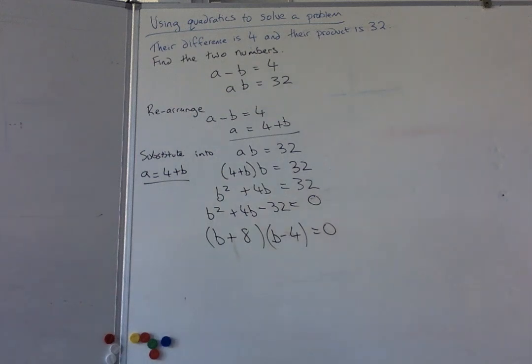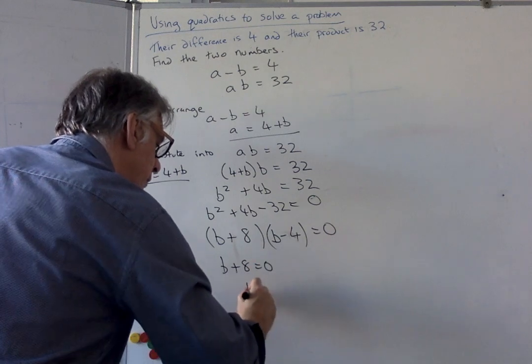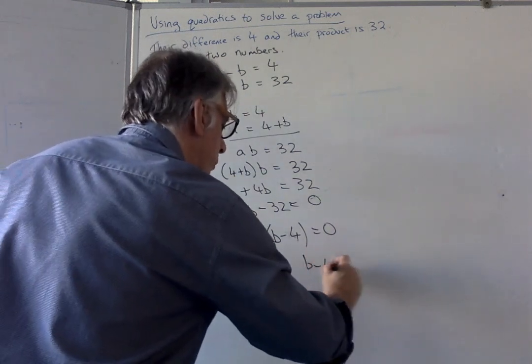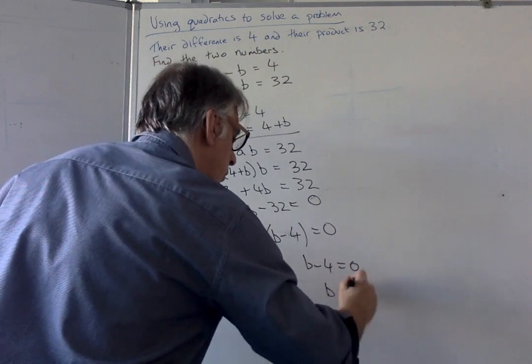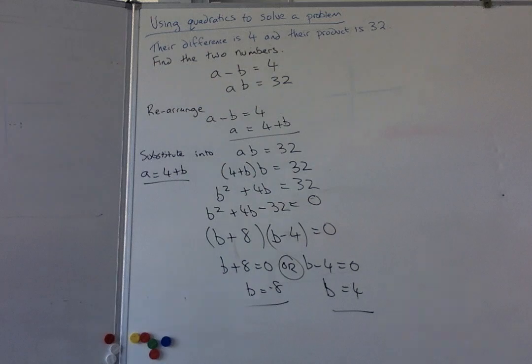Yeah, I get what I've got on the line above, so I'm happy to keep going. So B plus 8 equals 0, that means B equals minus 8. But also, B minus 4 equals 0, so B can also equal 4. So that means we have got more than one set of solutions.